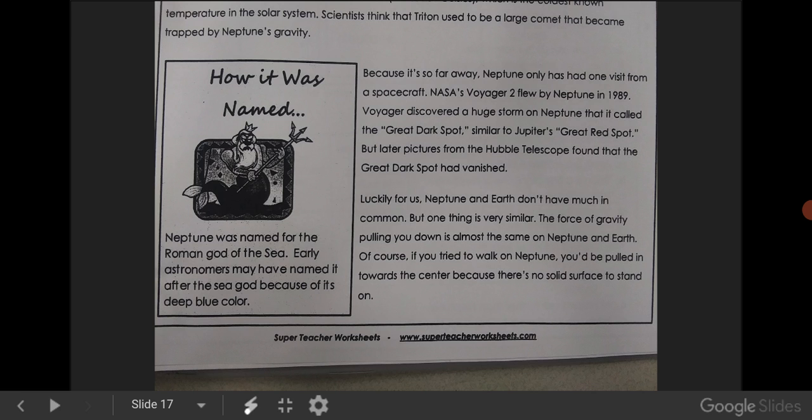How it was named. Neptune was named for the Roman god of the sea. Early astronomers may have named it after the sea because of its deep blue color.